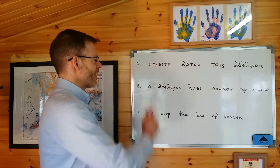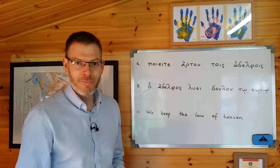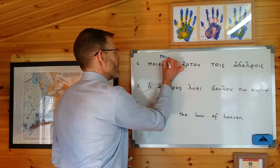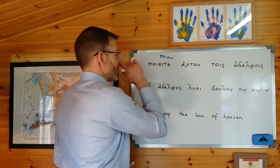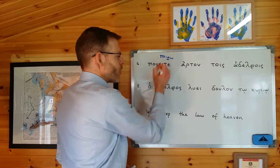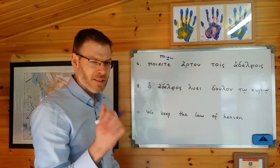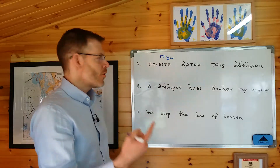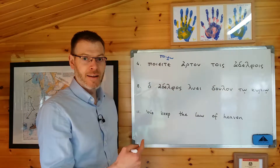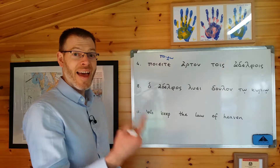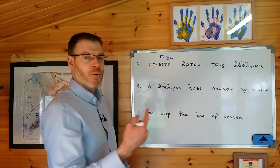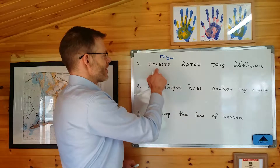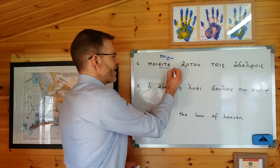The verb, that's right, is poieite. It comes from the verb poieo, which is an eo verb, which alters the ending slightly. So it goes poieo, poieis, poiei, poieumen, poieite, poieusin. So as you're chanting through those, you would have noticed that this is poieite.